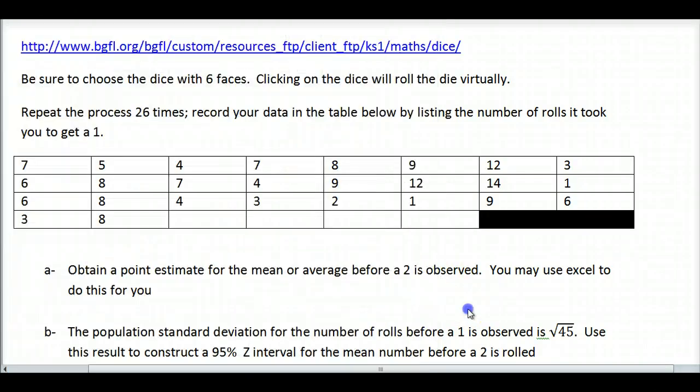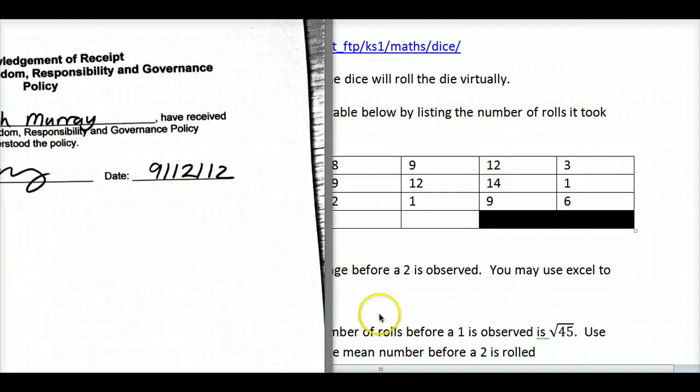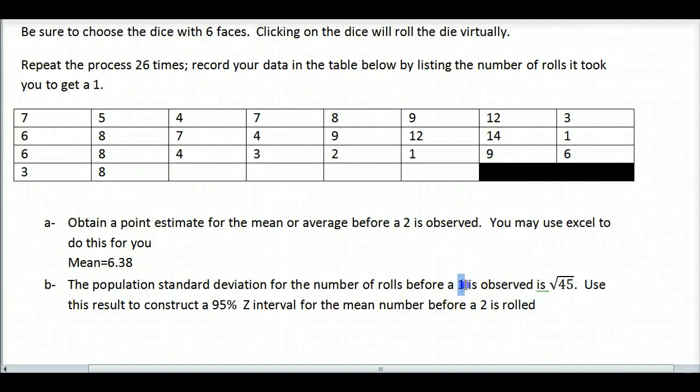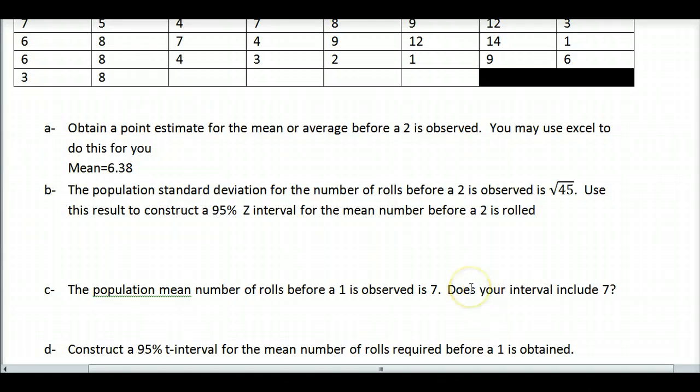So we have the mean. In my case, it's 6.38. Mean equals 6.38 - that was my average before the number 2 was observed, based on my data. It's important to note you all will have different means because you all have different data on how many times it took you to roll your dice. The population standard deviation for the number of rolls before a 2 is observed is square root of 45. Use this to construct a 95% confidence interval for a z interval.